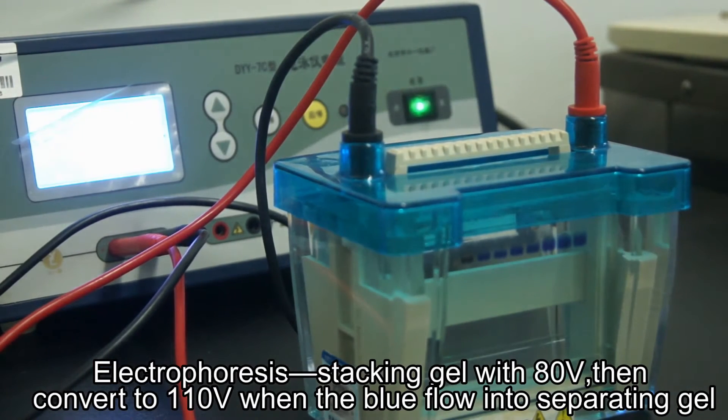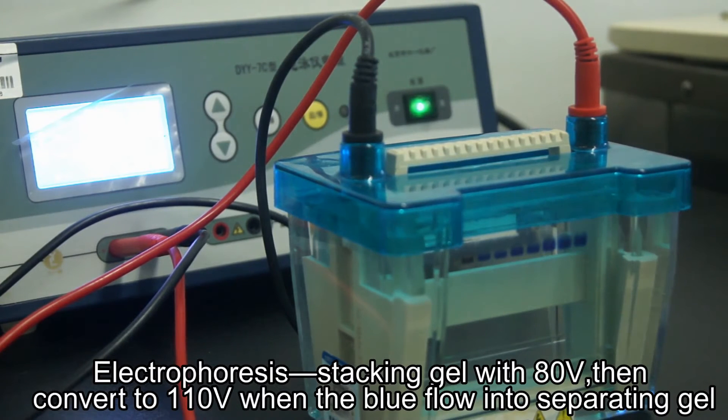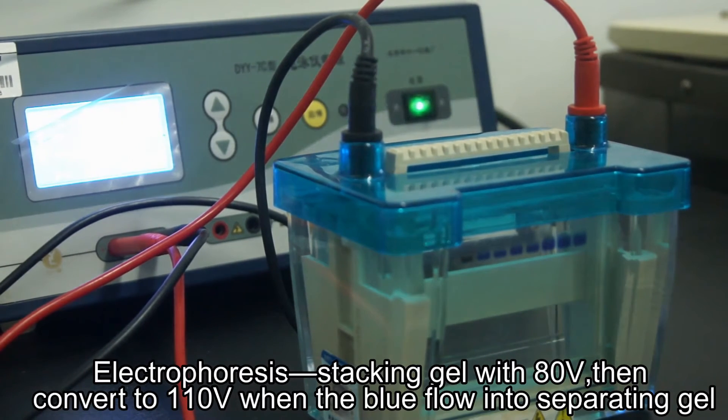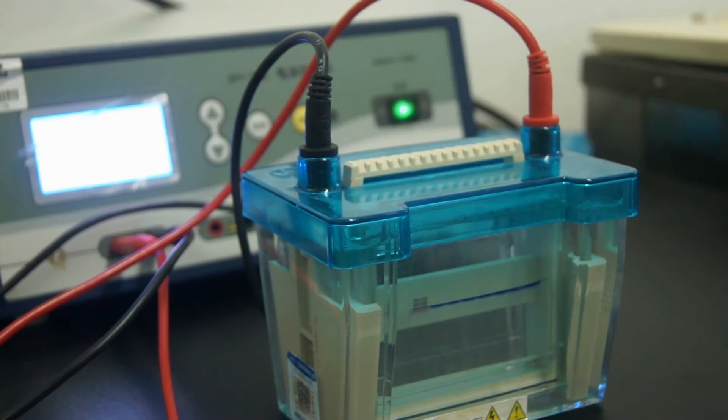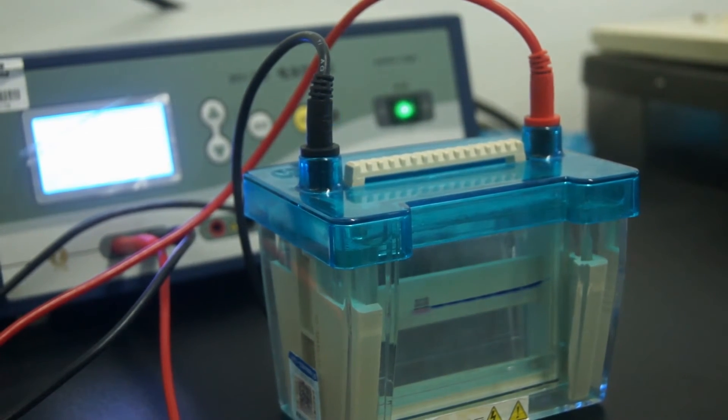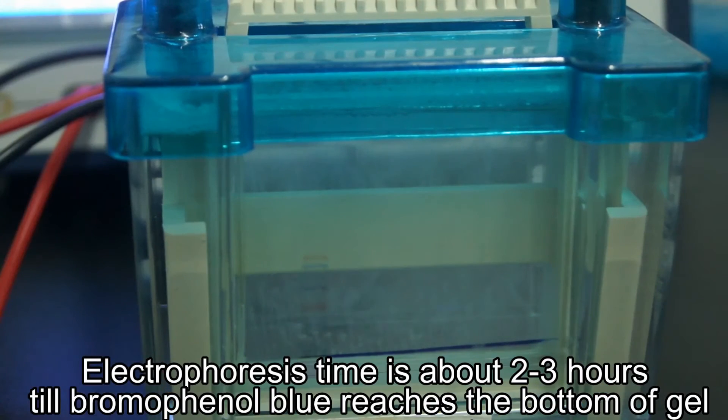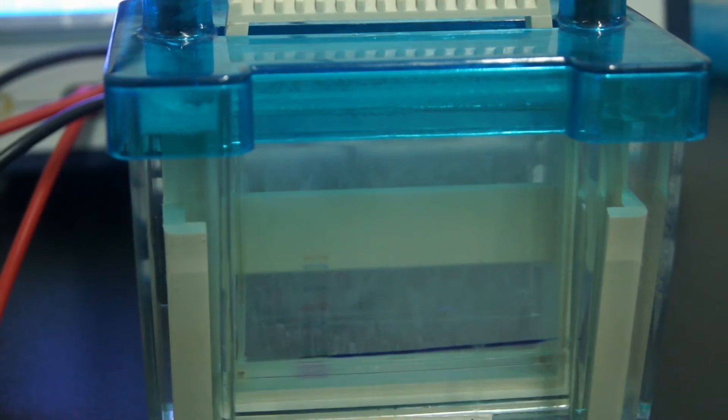Electrophoresis: The electrophoretic voltage of stacking gel is suggested to be 80 volts. The electrophoretic voltage of separating gel is suggested to be 110 to 150 volts. Electrophoresis time is about 2 to 3 hours till the bromophenol blue reaches the bottom of the gel.